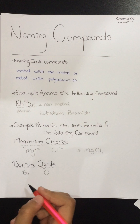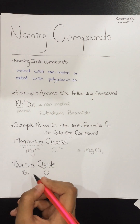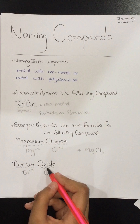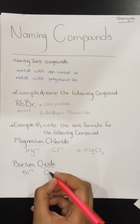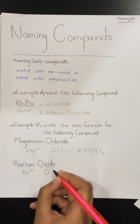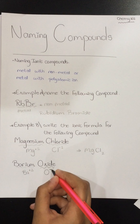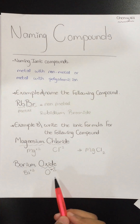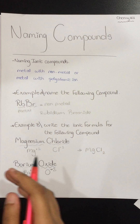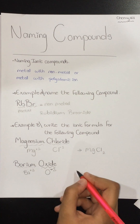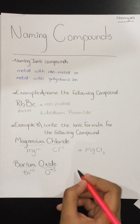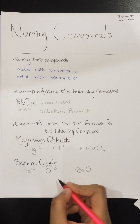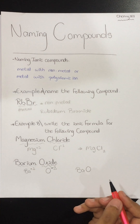Barium is in group 2, so its charge is plus 2. And oxygen is in group 6, so its charge is minus 2. When they come to exchange charge, the charges will be canceled. So our final ionic formula is BaO — barium oxide.